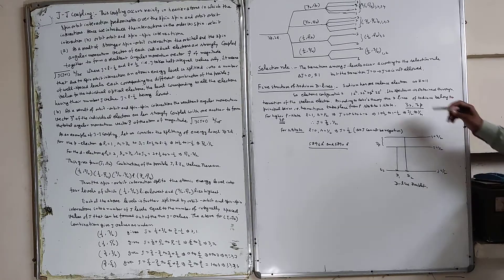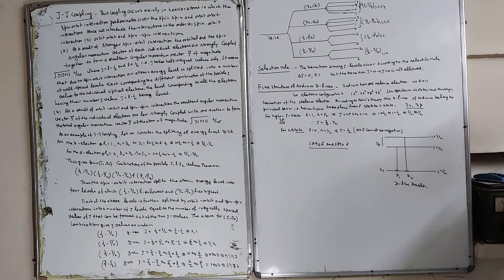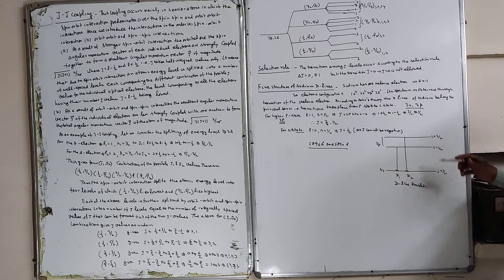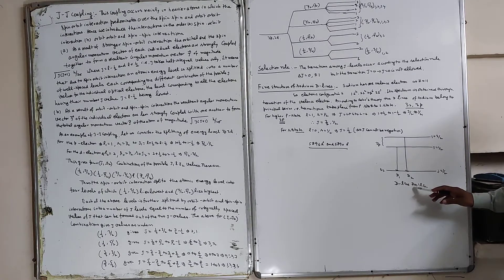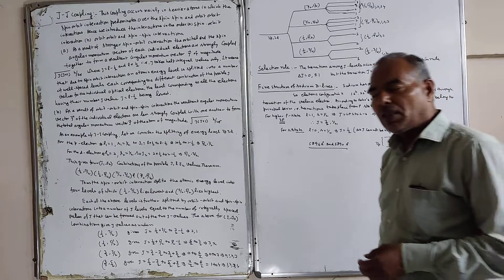The transitions from the higher orbit to the lower orbit give: j equal to 1/2 to j equal to 1/2, delta j equals zero (allowed), and j equal to 3/2 to j equal to 1/2, delta j equals one (allowed). Both transitions satisfy the selection rules, giving two spectral lines: D1 and D2. These are the sodium doublet lines with wavelengths of 5896 angstroms and 5890 angstroms.